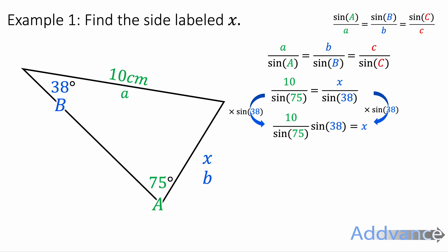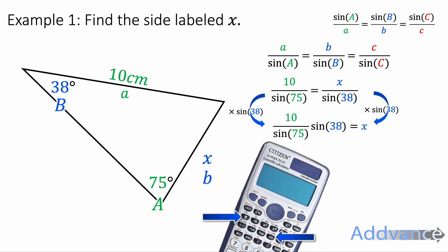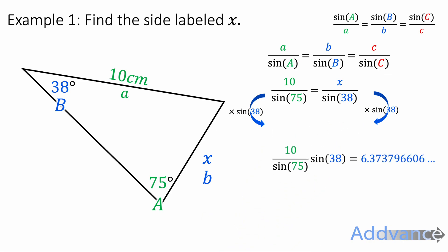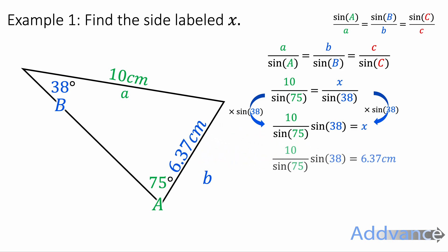We can type that into a calculator using our fraction button and the sine button to help us. You should get 6.3737 etc. Just make sure you're typing that into your calculator and you are able to get that exact decimal — it helps us know we're on the same page. You can round that to 6.37 centimetres and that is the final answer.